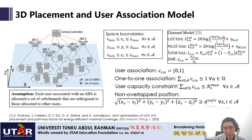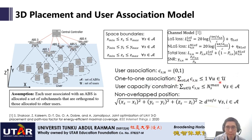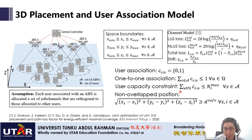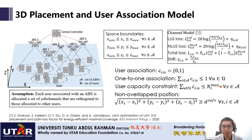Each user is associated with only one aerial base station, captured by one constraint. Each aerial base station can serve up to a certain maximum number of users, captured by another constraint. And the positions of each aerial base station must not be the same, to avoid collisions, which is captured by a further constraint.